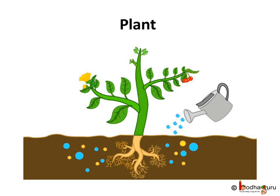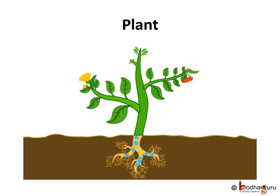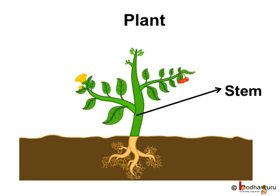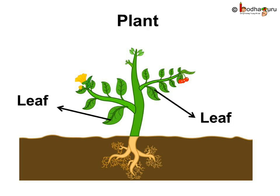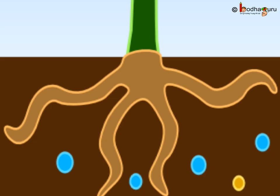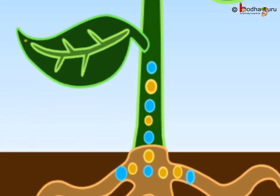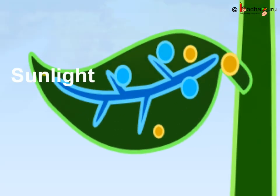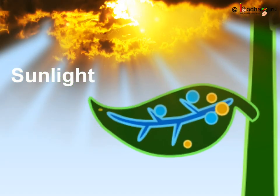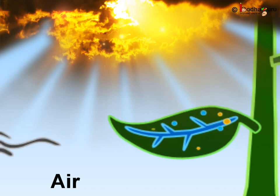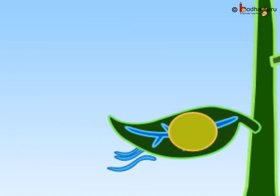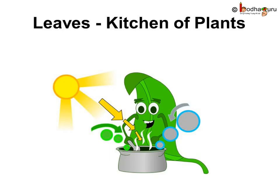Do you know how water and nutrients from the roots travel up through all the parts of the plant? It is through the stem of the plant. The stem is the upper part of the plant. The flat green part of the plant that makes food for the plant is called the leaf. Leaves prepare food in the presence of sunlight, water and air.